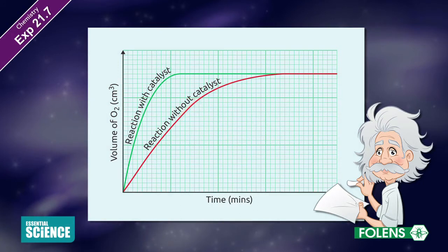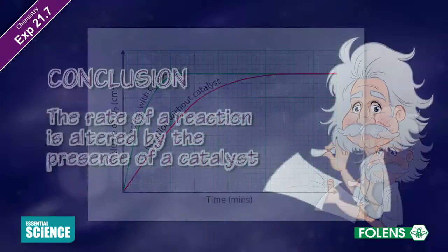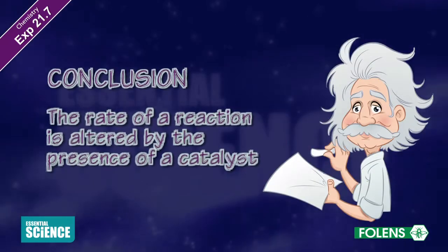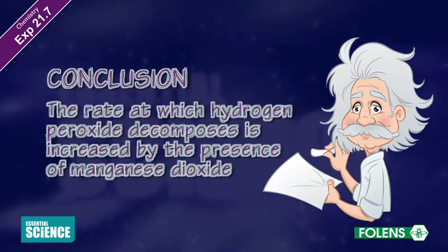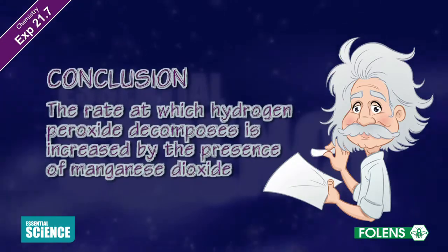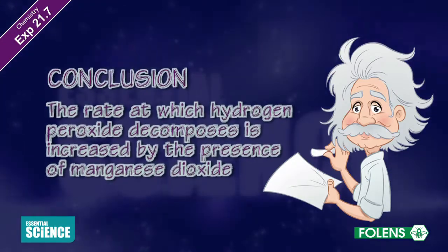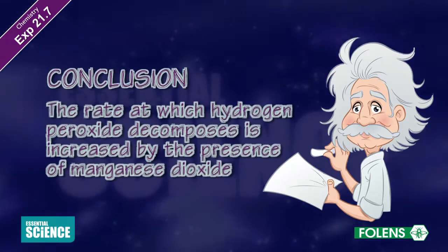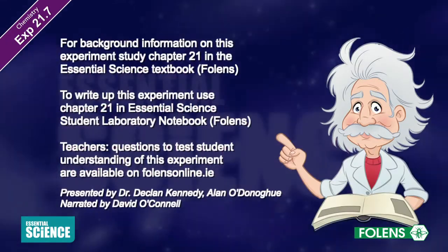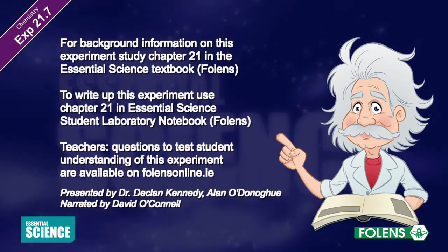However, this is not drawn to scale as it could take many months for the hydrogen peroxide to completely break down if no catalyst were present. We conclude that the rate of reaction is altered by the presence of a catalyst. The rate at which hydrogen peroxide decomposes is increased by the presence of manganese dioxide. This concludes the experiment.